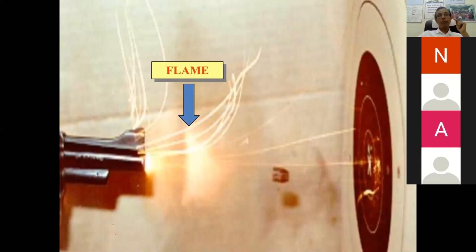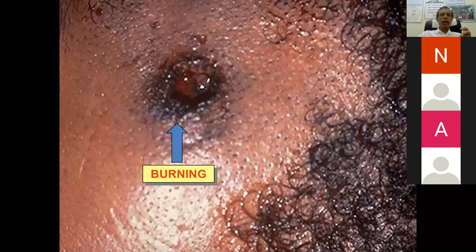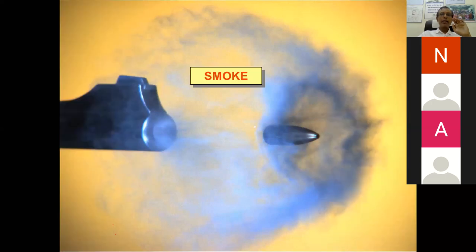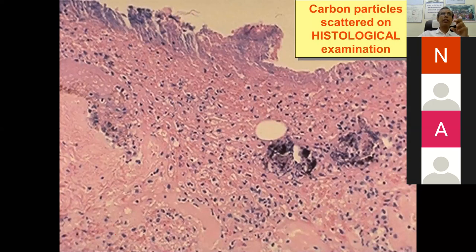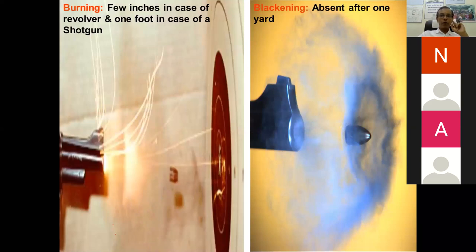The bullet is not alone — it comes with flame, gases, smoke, and unburned gunpowder. If fired from near or direct contact, the flame causes burning of the skin. Smoke causes tattooing or blackish discoloration on the skin. Histopathological examination shows carbon particles (violet particles under microscopy). Burning is present within a few inches in case of a revolver, and up to one foot in case of a shotgun. Blackening is due to smoke and is absent after one year.